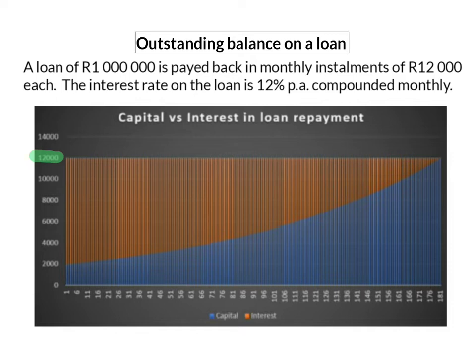When you start off repaying your loan, the biggest part of your monthly installment is interest. In month 1, for example, 10,000 Rand of the 12,000 Rand is interest, and only the bottom 2,000 Rand goes to the repaying of your loan. So, even though after one month you paid 12,000 Rand, your loan will only decrease by 2,000 Rand, because the rest was interest paid to the financial institution.